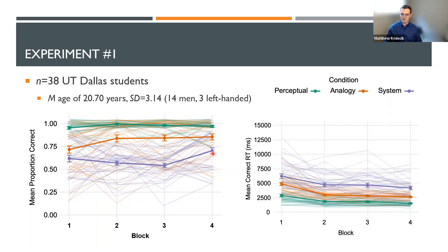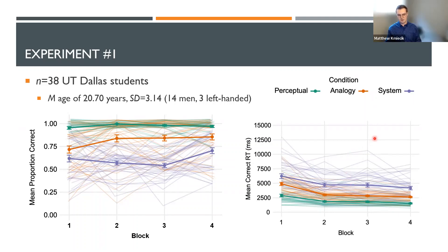Plotting mean proportion correct across the four blocks, the perceptual matching condition was near ceiling performance the whole time — very easy. In the analogy condition, it was off to a rocky start but participants plateaued around 80% throughout the rest of the experiment. However, the system mapping problems were quite problematic: participants started pretty low in their performance and actually got worse over time. With two choices, 50% would be chance performance, so participants were essentially at chance. There was a slight increase by block four, suggesting they may have been understanding it by the end. Correct reaction time showed a general trend of faster responses over time, but it did take longer to complete system mappings versus analogy problems.